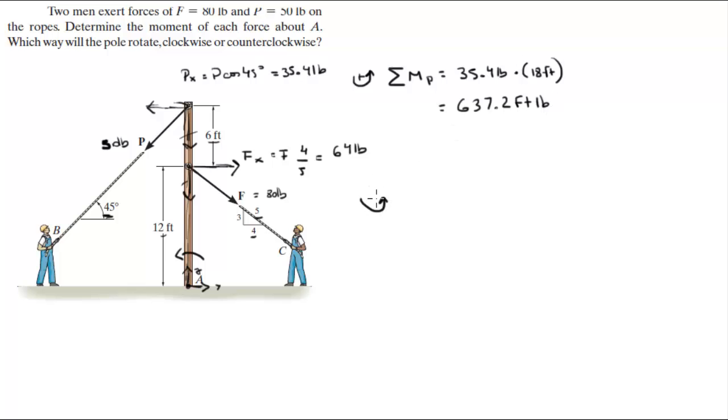Now assuming counterclockwise is positive, the moment that F is creating is given by the magnitude of the X component of F, which is 64 pounds. It's trying to turn it clockwise so it's negative, and you multiply by the length of the lever arm which is 12 feet, it's a shorter lever arm.